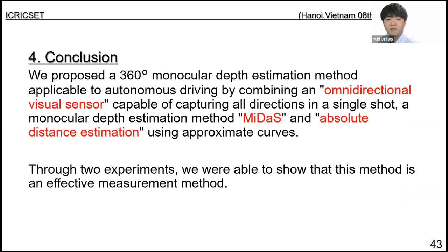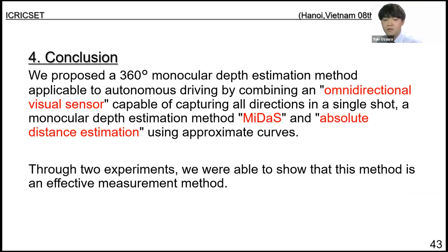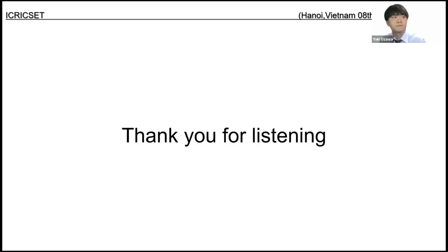In conclusion, we proposed a 360-degree monocular depth estimation method applicable to autonomous driving, combining an omnidirectional visual sensor capable of capturing all directions in a single shot, a monocular depth estimation model MiDaS, and absolute distance estimation using an approximation curve. Through two experiments, we were able to show that this method is an effective measurement method. Thank you for listening.